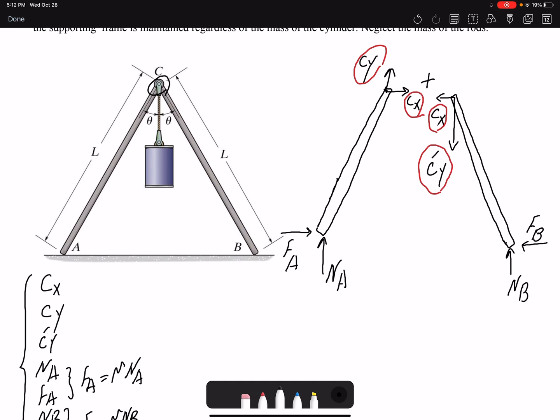So we can write the moment equation about this point and then find the relation between the two, because we don't need the values for FA and NA, we only need the relation between the two so we can find the coefficient of static friction.